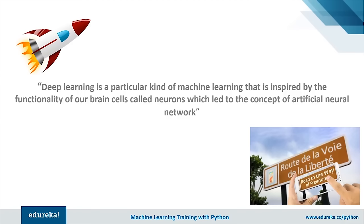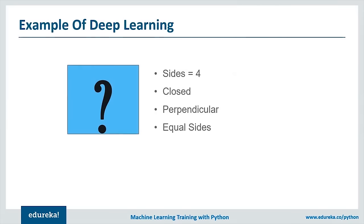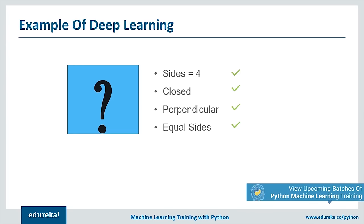To understand deep learning conceptually: recognizing a square involves checking for four lines, whether they're connected and closed, whether they're perpendicular, and whether all sides are equal. This is a nested hierarchy of concepts — a complex task broken into simpler tasks. Deep learning does the same thing but at a larger scale.